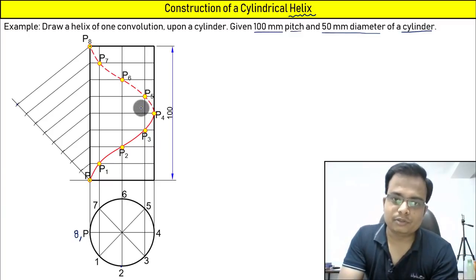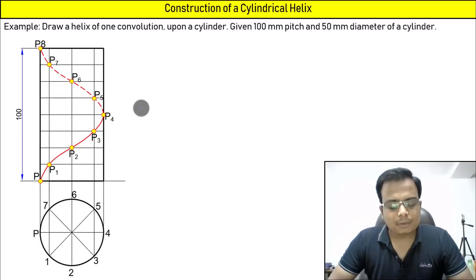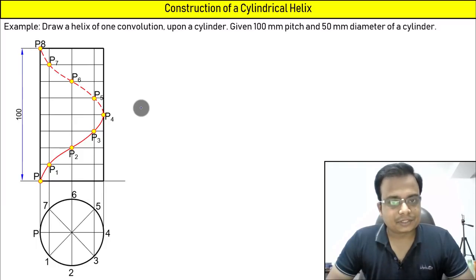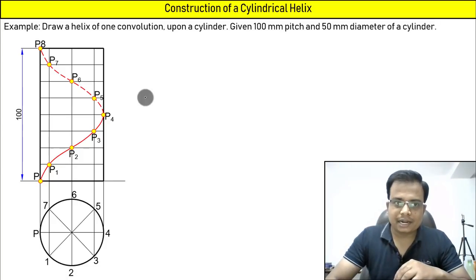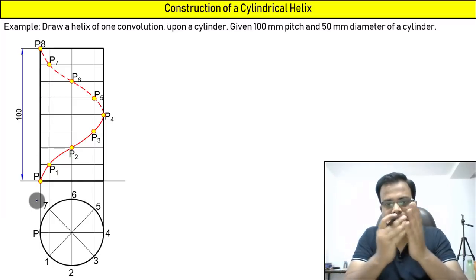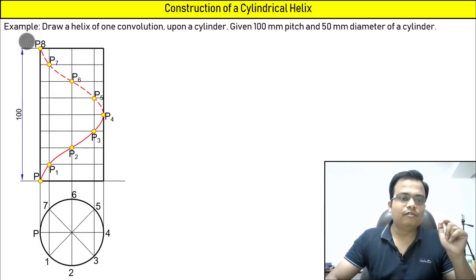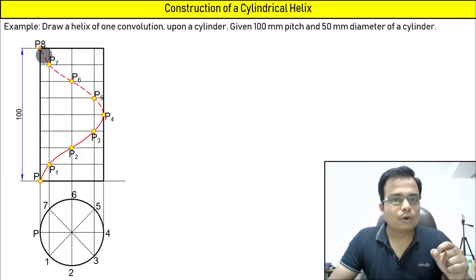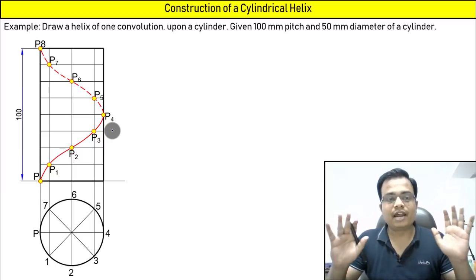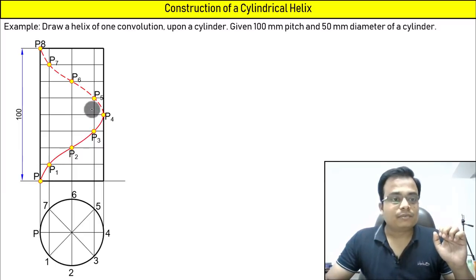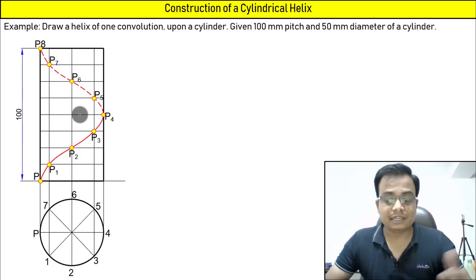There is something else which I need to tell you — this is very interesting. I'm pretty much sure you must have gone through development of surfaces. If you try to cut the cylinder open from this line with a scissor, lay it absolutely flat, try to comment on the profile of this curve. Will it still be looking like a curve, or will it become a line? If you make the development of this cylinder, what would be the status of this curve?